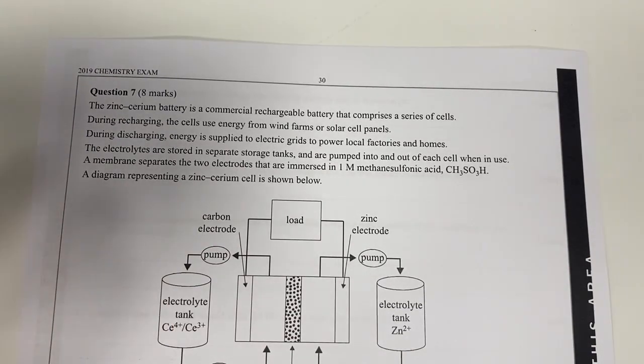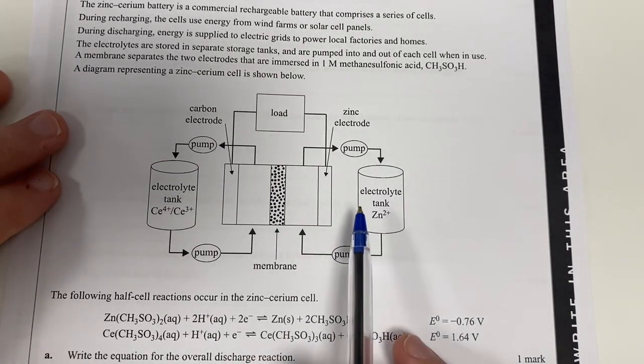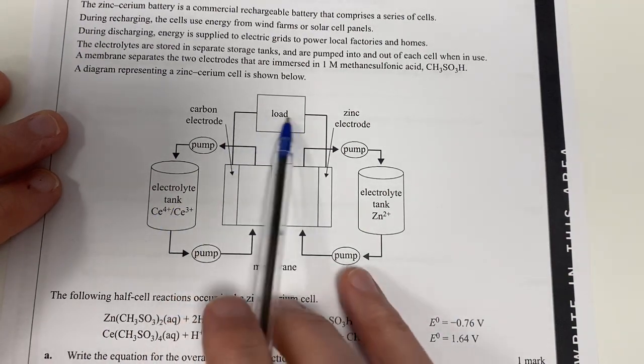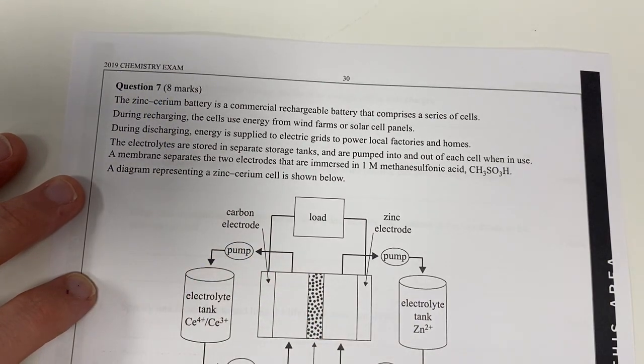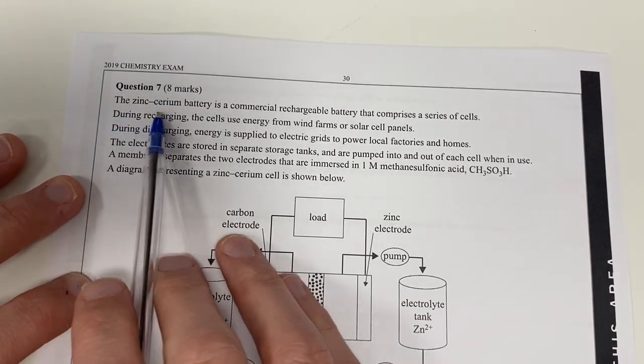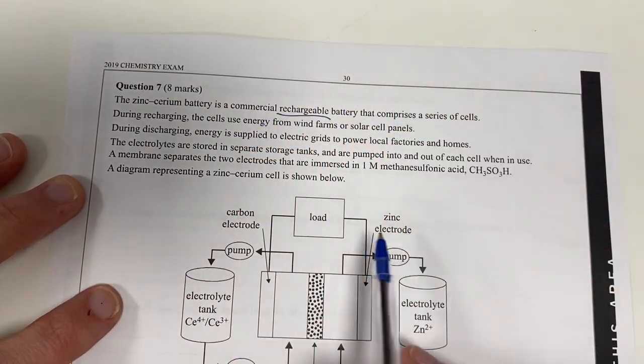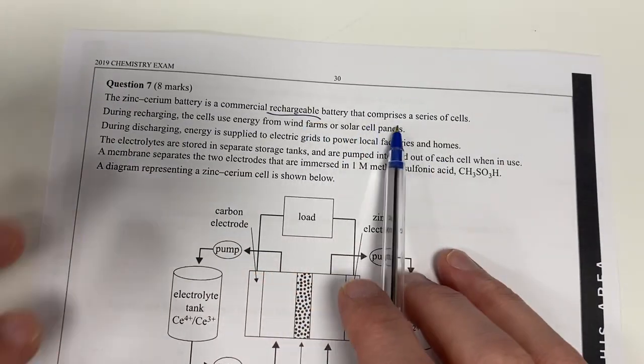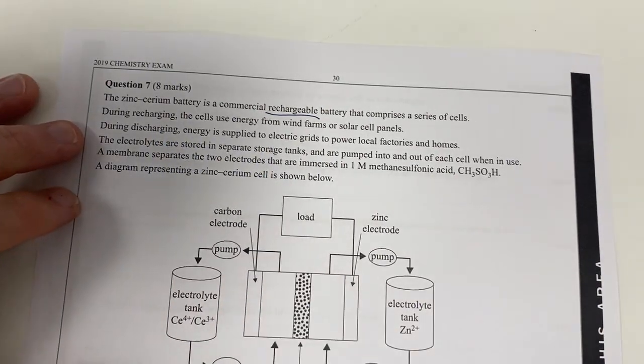Question 7 on our 2019 VCAA exam and it looks like we've got a funky looking fuel cell here. We've got some stuff being pumped in from the external thing and we've also got a load here. It's worth 8 marks. We're going to be doing some redox chemistry, that's for sure. We've got a zinc cerium battery. It's a commercial rechargeable battery, it's also rechargeable and it's comprised of a series of cells.